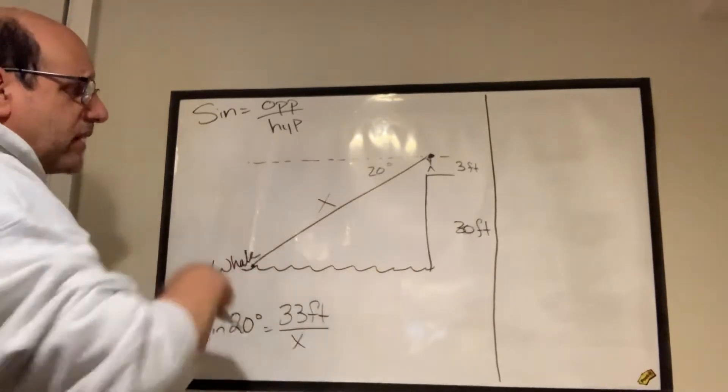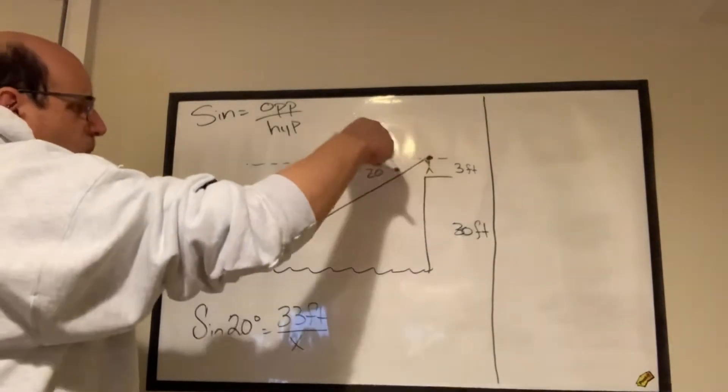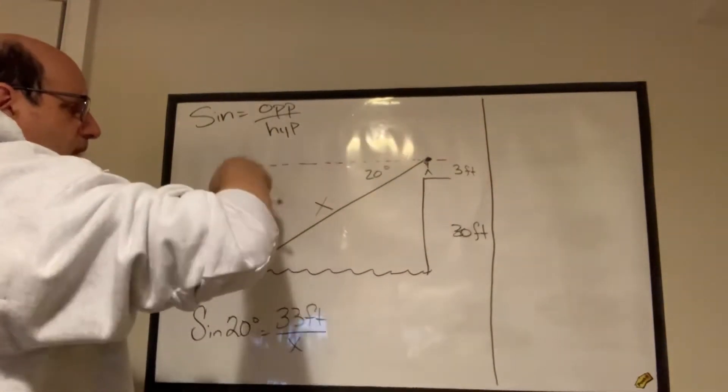So it says the angle of declination or depression is 20 degrees. So if you make a right angle here, then this 20 degrees is here, and we understand how rectangles and angles work.